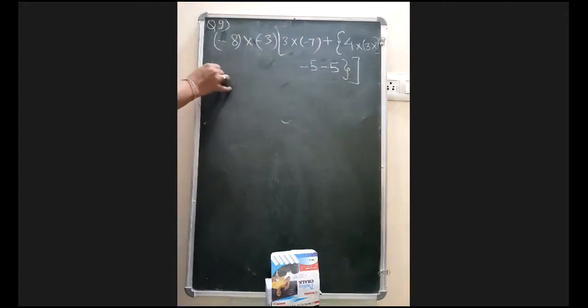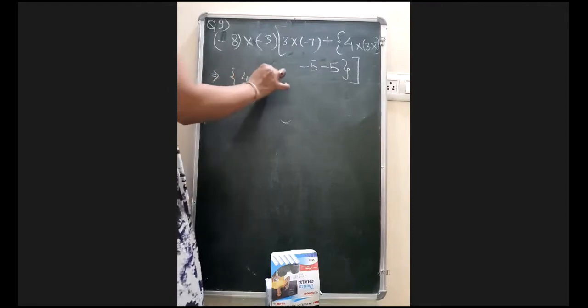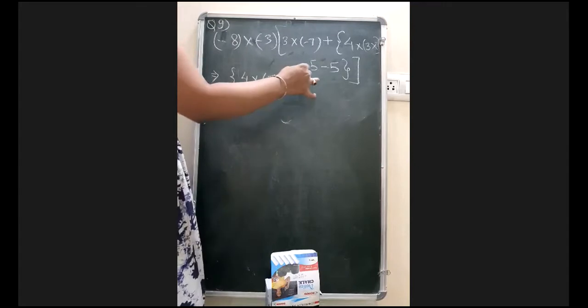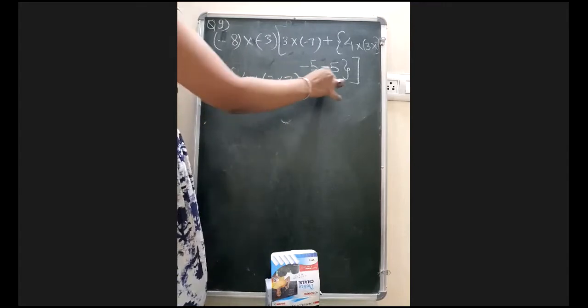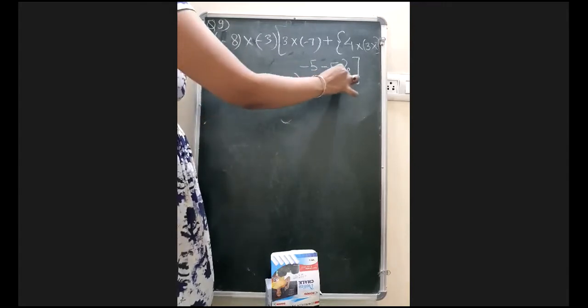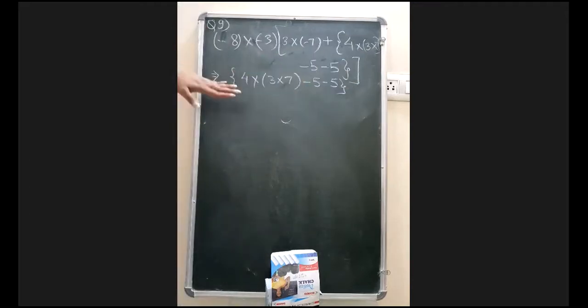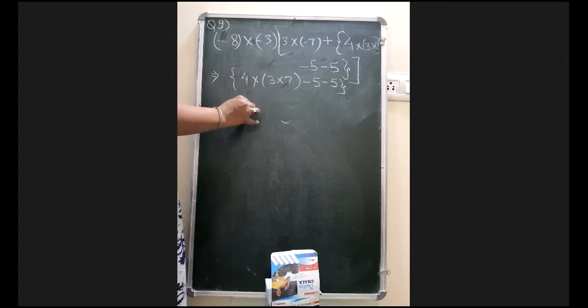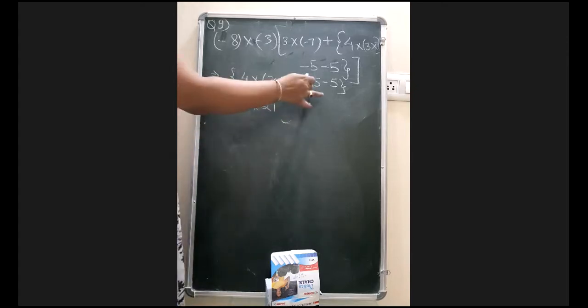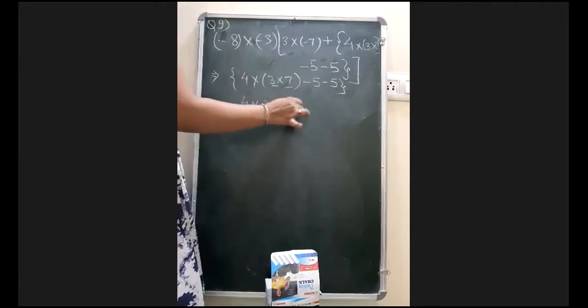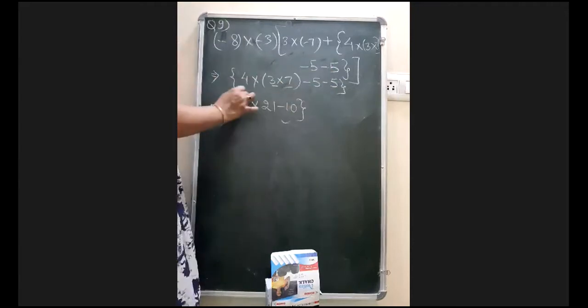For example, I am taking this one: 4 into 3 into 7, then minus 5 is written and then minus 5 is written and this bracket is closed. So you also solve along with me. So here you can see that 4 into 3 into 7 which will give us 21, then minus 5 and minus 5 will be written together which can be written as minus 10.